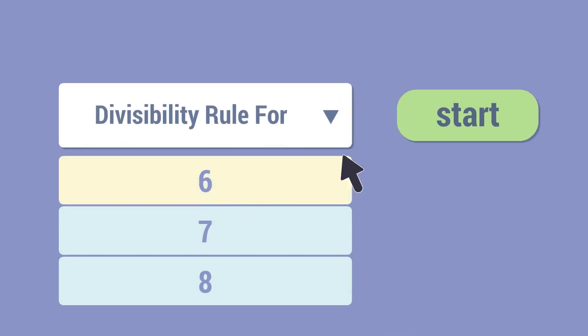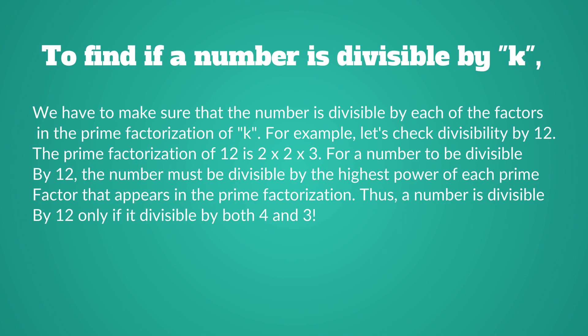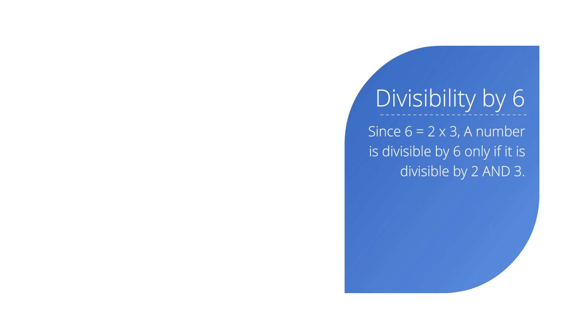Let's now take a look at the divisibility rule for 6. To find if a number is divisible by an integer k, we have to make sure that the number is divisible by each of the factors in the prime factorization of k. For example, the prime factorization of 12 is 2×2×3, so a number is divisible by 12 only if it is divisible by 4 and 3. Since 6 equals 2×3, a number is divisible by 6 only if it is divisible by both 2 and 3.